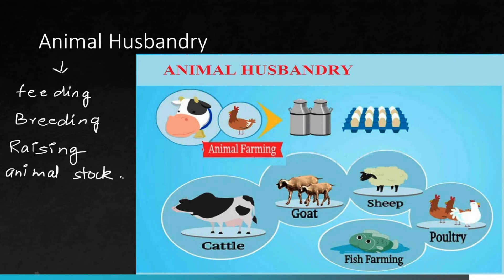So basically, the livestock's primary purpose is to provide meat and milk. As you can see in the picture, this is the animal farming we have — cattle, goat, sheep, fish farming and poultry. These all come under animal husbandry. Milk animals include cows, buffaloes and also goat, though goat is generally used for meat. Goat's milk is used in fewer places.